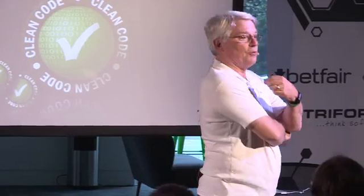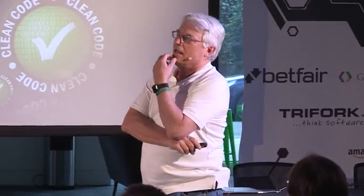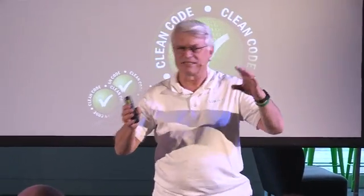Brad Cox was a Smalltalk programmer who was forced to program in C, and he didn't like it, so he wrote a little pre-processor in front of C that made it look like Smalltalk and called it Objective-C. Bjarne Stroustrup was a Simula programmer also forced into C, so he wrote a pre-processor and called it 'C with classes,' and then about three years later a friend convinced him to rename it C++.